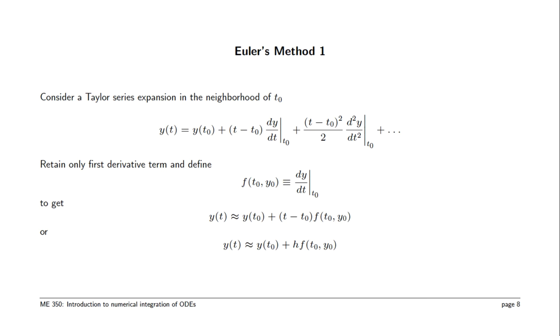So our approximation y(t) near y(t_0) is t minus t_0 times the f value at t_0, y_0. We're going to use h instead in the last line to simplify the nomenclature.